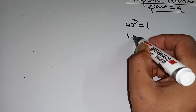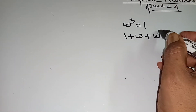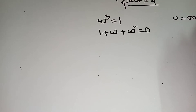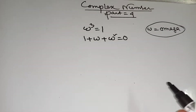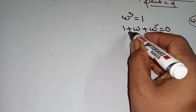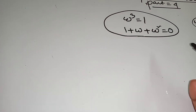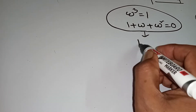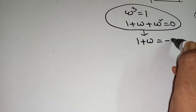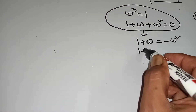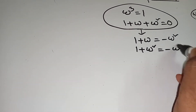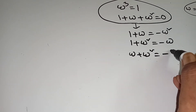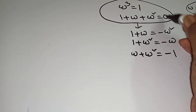Another formula: 1 plus omega plus omega square equal to 0. These two are the main formulas. From these you can write many derived forms: 1 plus omega equal to minus omega square; 1 plus omega square equal to minus omega; omega plus omega square equal to minus 1. From these formulas you can write in many ways.